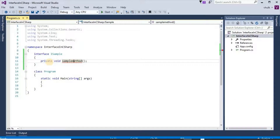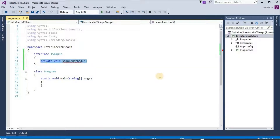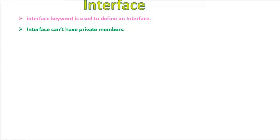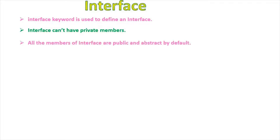If we give private access modifier here, then private is not valid for this item. Interface cannot have private members. All the members of an interface are public and abstract by default.